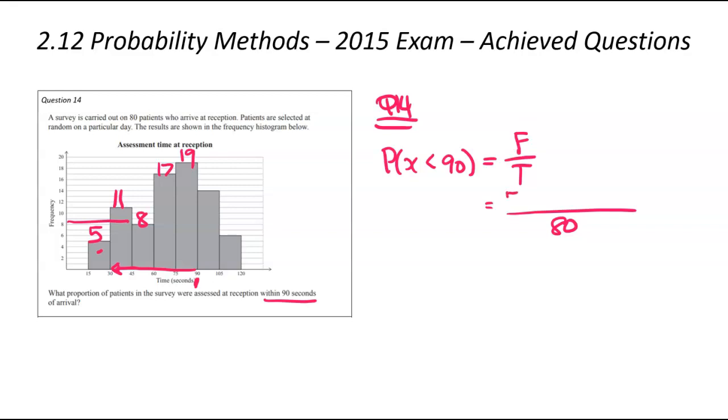We're going to go 5 plus 11 plus 8 plus 17 plus 19. We now add that all up: 30, 35, 43, and then 60. So that's going to be 60 over 80, which converts to a decimal 0.75. Roughly 75% of patients will be seen within 90 seconds on that random given day.